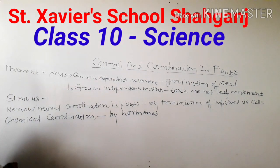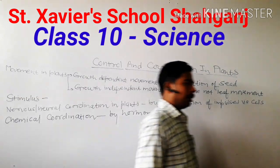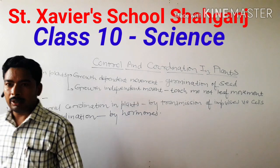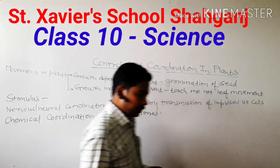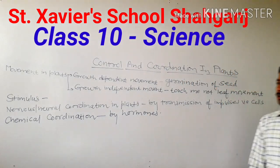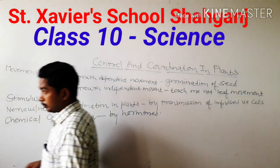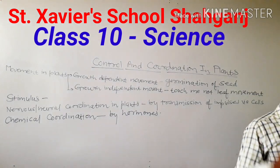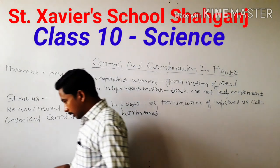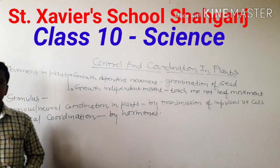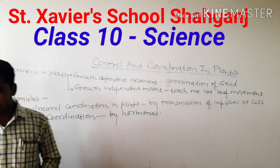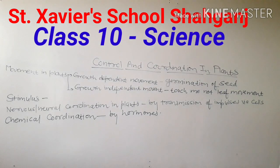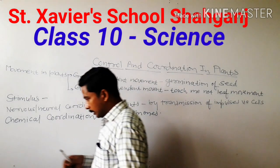Good morning, dear students. Today we are going to study about control and coordination in plants. In this chapter, we will study how plants interact with the changes taking place in the environment, how they adjust and accommodate with those changes, and how plants create a correlation with environmental changes.